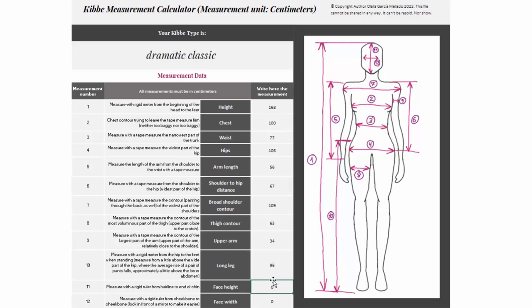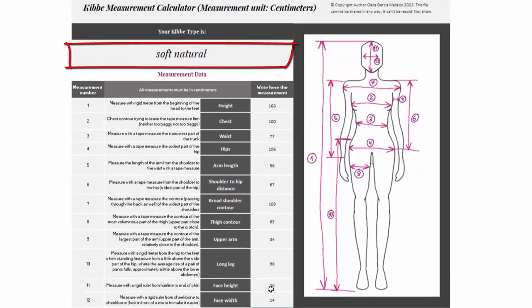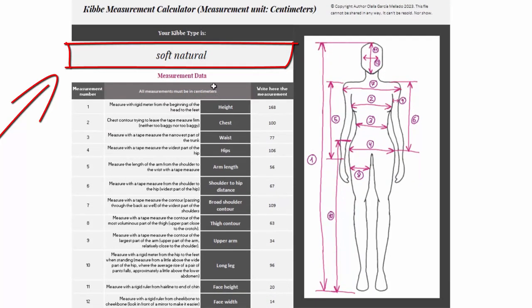When you fill in the table you will see that at the top you finally get the result of your Kibbe body type. So it is quick, simple, and very easy to use, and you can find it in both centimeters and inches.